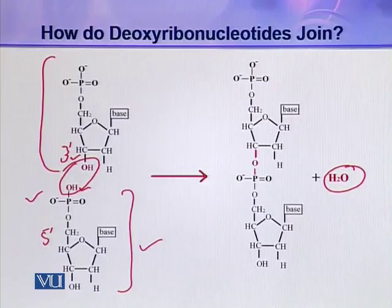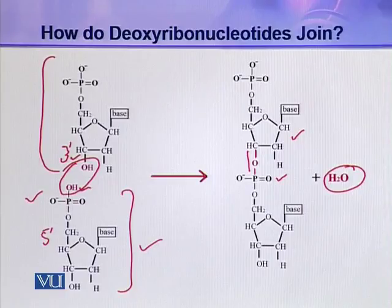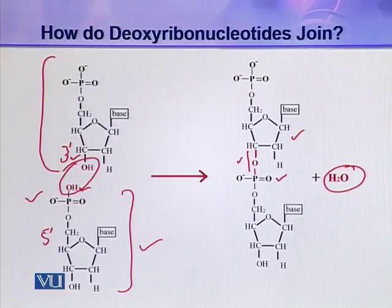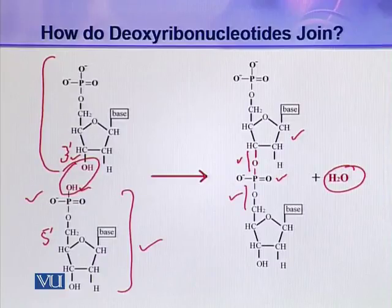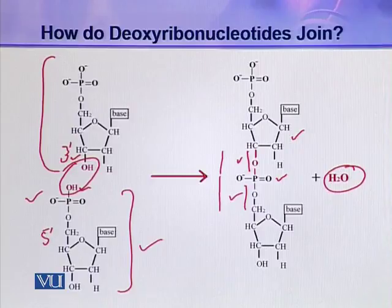This ester linkage is established between the pentose of one nucleotide and the phosphoric acid of the other nucleotide, so one nucleotide is attached to the other through this ester linkage. This linkage is called phosphodiester linkage because there is one ester here and another ester here — two esters and a phosphate group are included in this whole linkage.